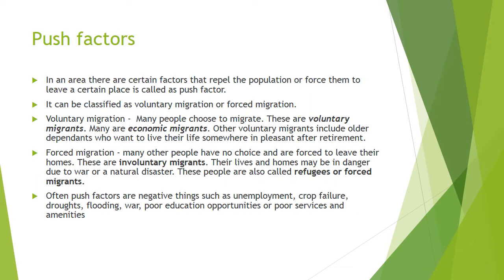Now let's look at push and pull factors. Push means to move something away from yourself. In an area, there are certain factors that repel the population or force them to leave — these are called push factors. Some areas are unpleasant and not suitable for human settlement. In such conditions, the population is compelled to leave that particular area. Push factors are of two types: voluntary migration and forced migration.